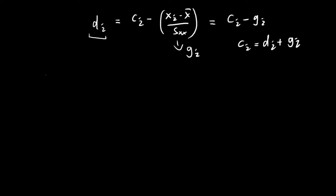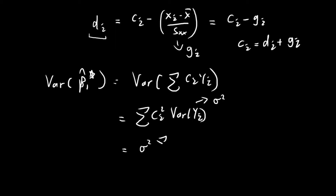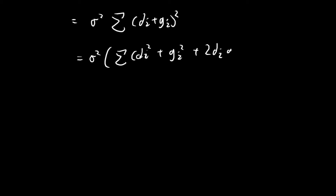With these terms defined, I'm going to consider the variance of beta 1 hat star. This is just equal to the variance of the sum of ci times yi, which equals the sum of ci squared times the variance of yi. Since all variances of yi equal sigma squared, this becomes sigma squared times the sum of ci squared. Substituting ci equals di plus gi and squaring, we get sigma squared times the sum of di squared plus gi squared plus 2 di gi. So the variance of beta 1 hat star is composed of three components.